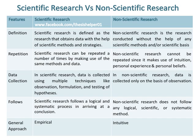In scientific research, data is collected using multiple techniques like observation, formulation, and testing of hypotheses, whereas in non-scientific research, data is collected only on the basis of observation. Scientific research follows a logical and systematic process in arriving at a conclusion.